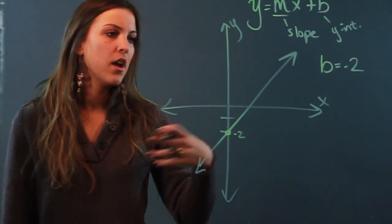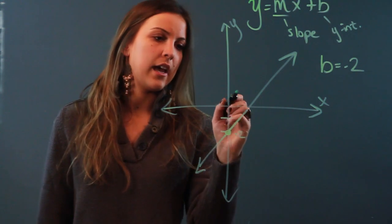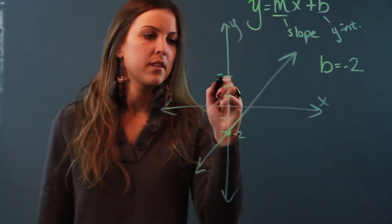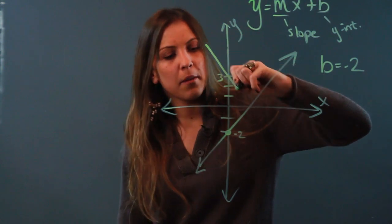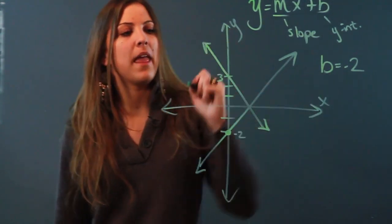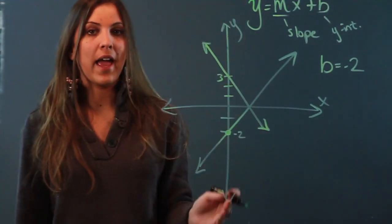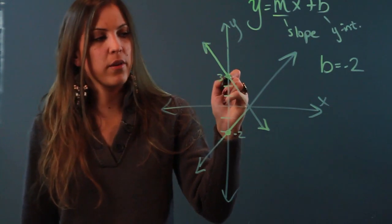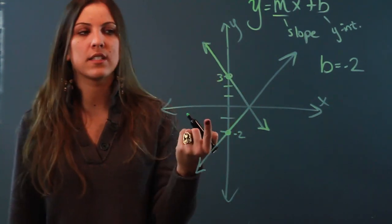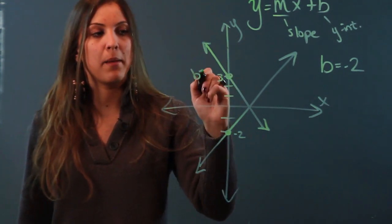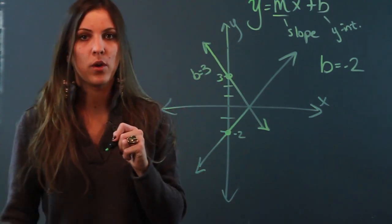If I drew another line for you, let's say when y is 3. This line hits the y-axis at 3, so for this line my B is equal to 3.